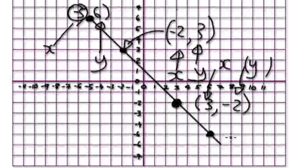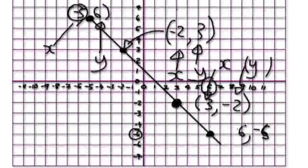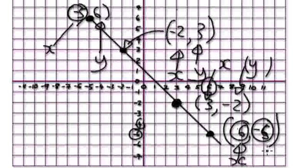And if you look at this point here, it would be 6, minus 5. Sorry, I misread — this number here is 6, which is x, and then minus 5 for y. So again, this would be your x, and this here would be your y.